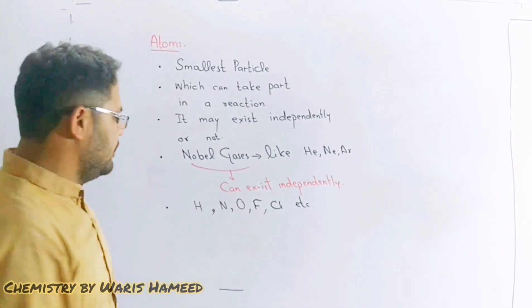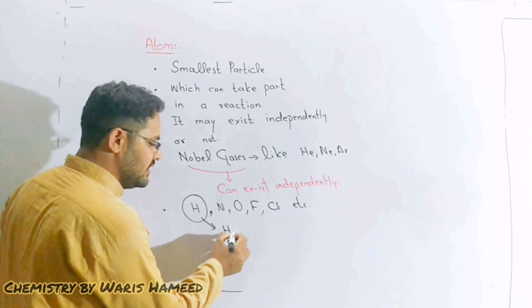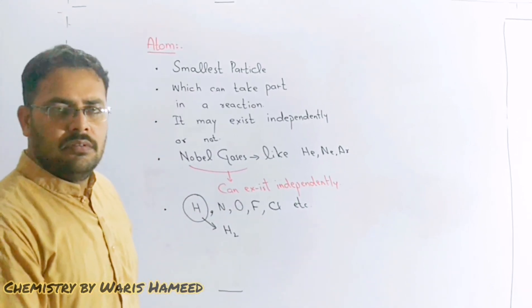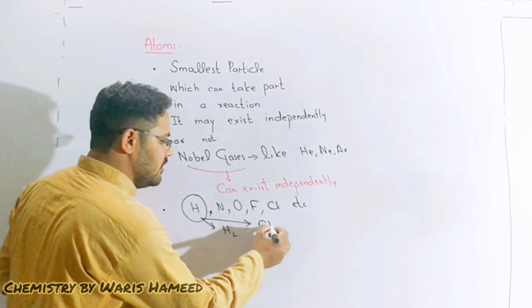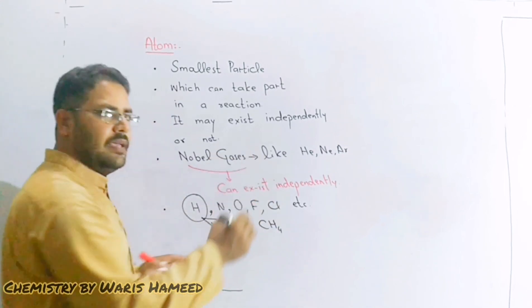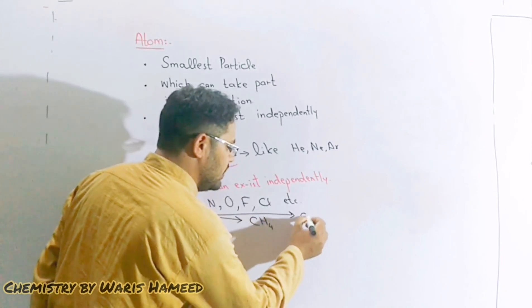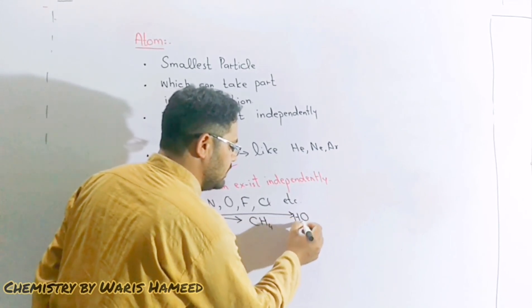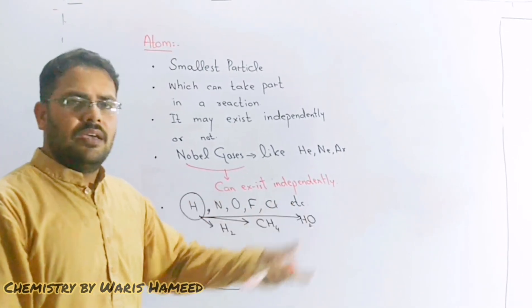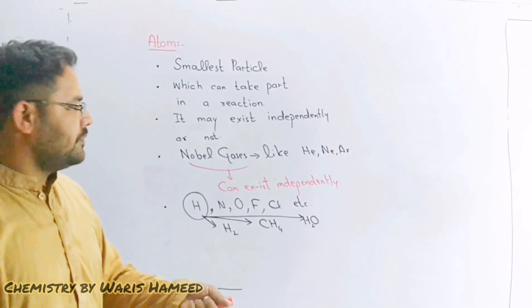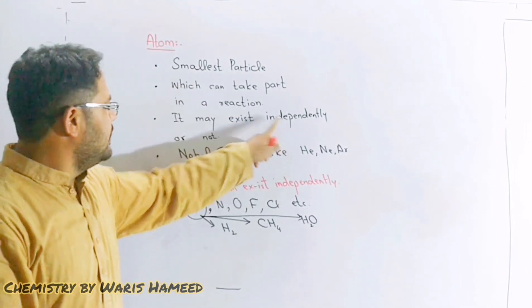Like if hydrogen wants to be stable it will form a bond with itself, or there is other possibility that it may form a bond with another atom like carbon. It may also make bond with other atoms like oxygen. It wants to be stable by making bond with other atoms.